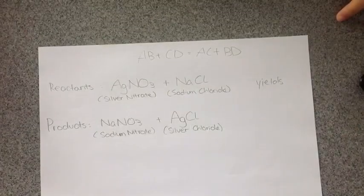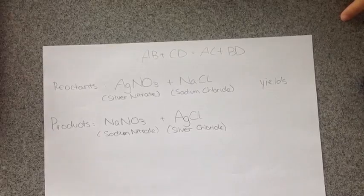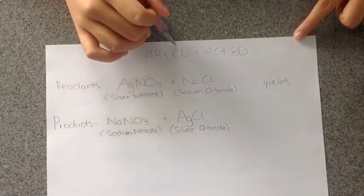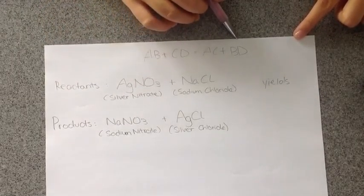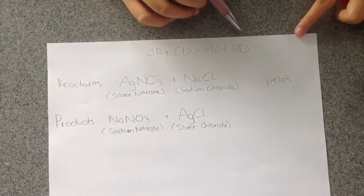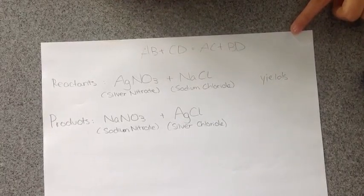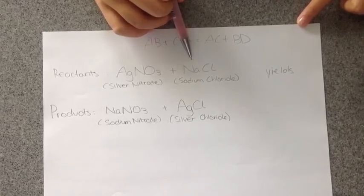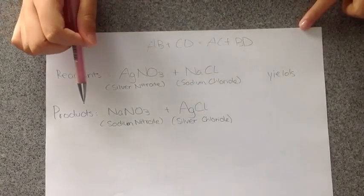This displacement reaction is when two reactants combine and make two different products. You can think of it as AB plus CD equals AC plus BD. The experiment we did included two reactants, silver nitrate and sodium chloride. The two reactants bonded and made two products,